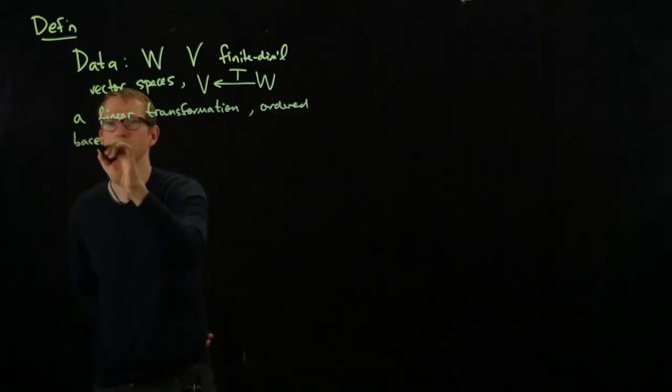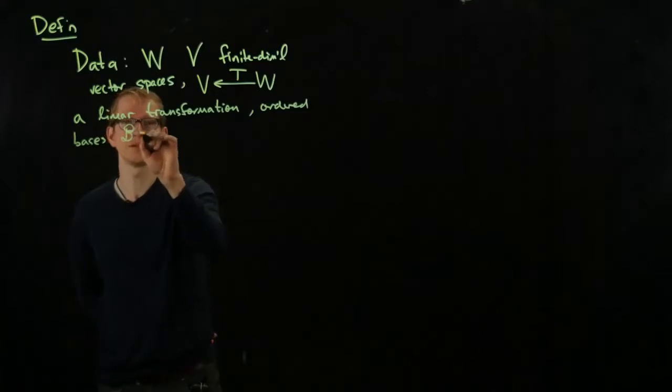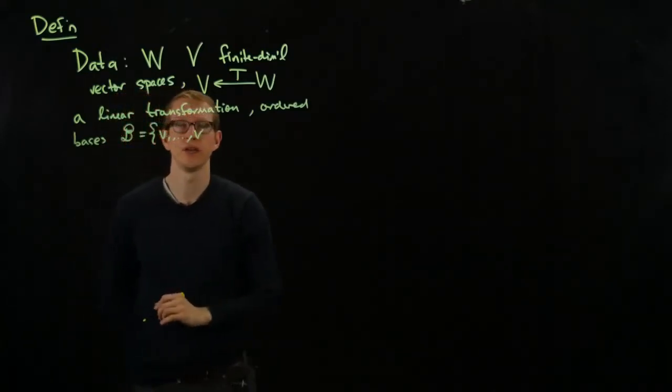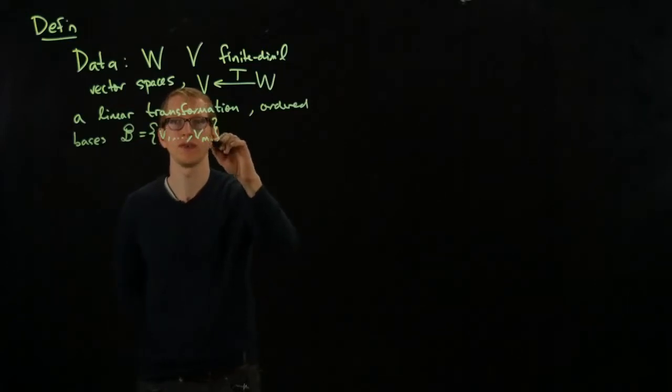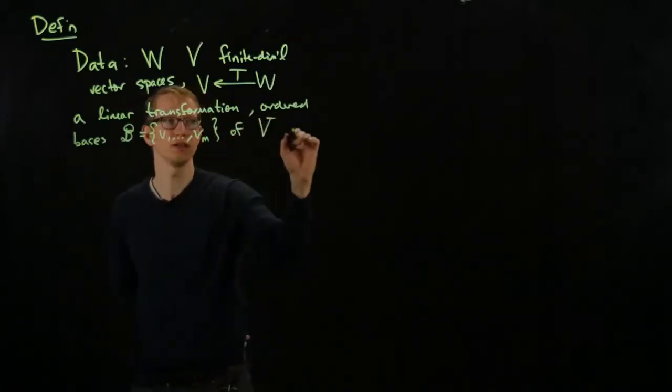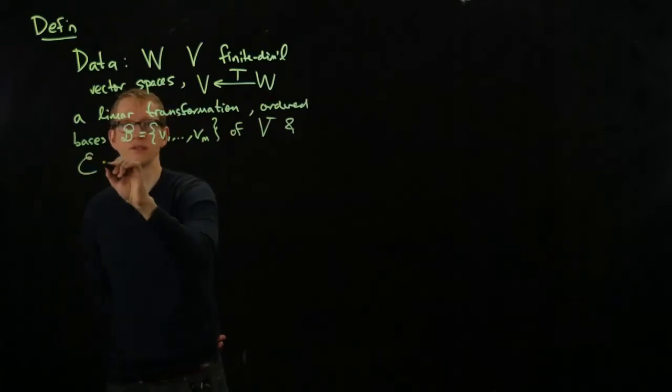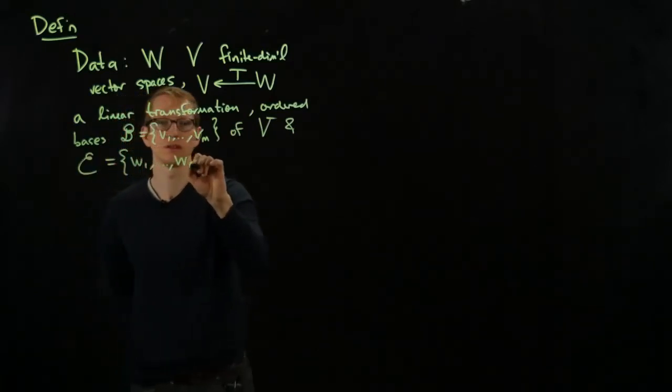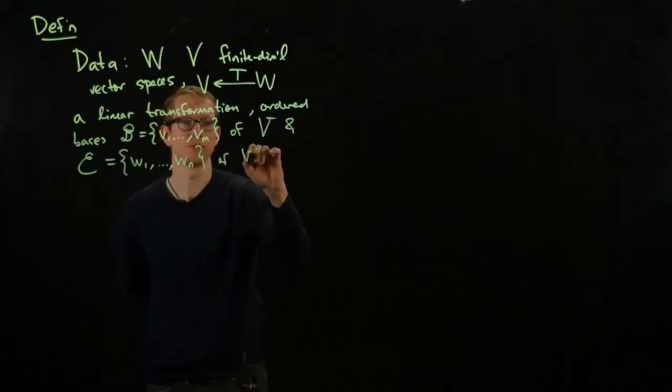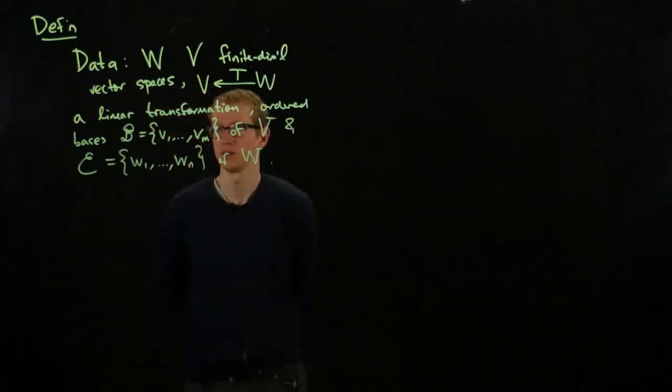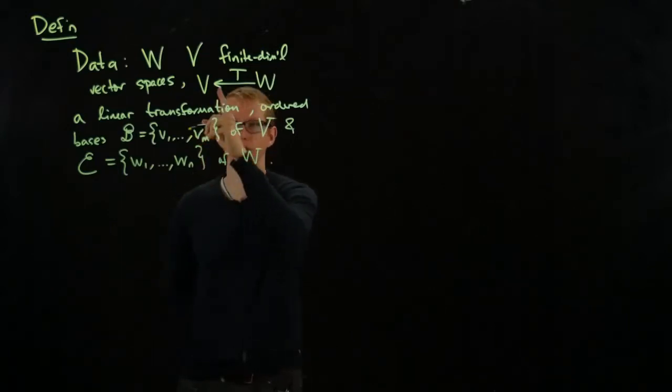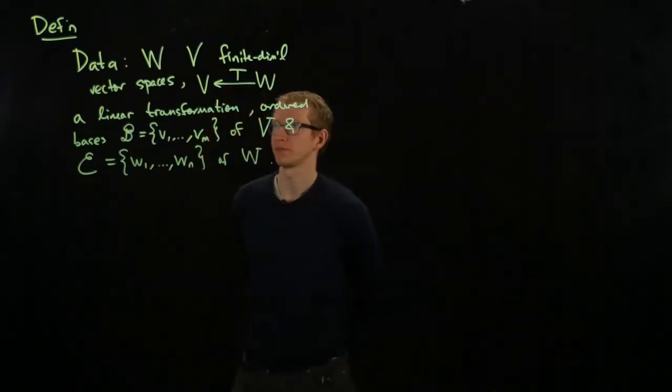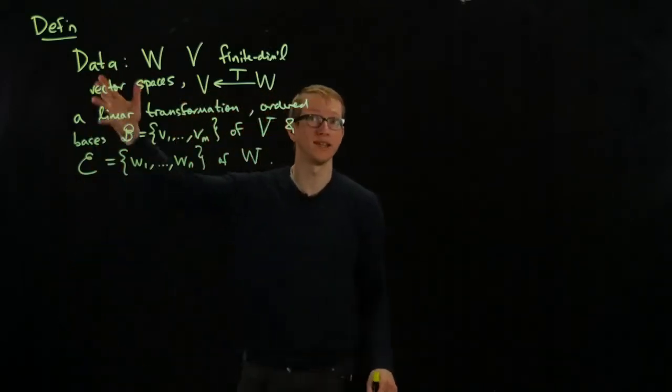B, and let's say the dimension of V is m of V, and an ordered basis C of W. So here, you know, I'm not going to write this, but m is the dimension of V, and n is the dimension of W.